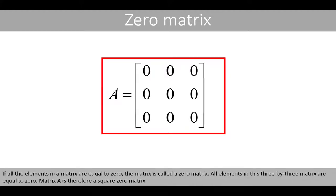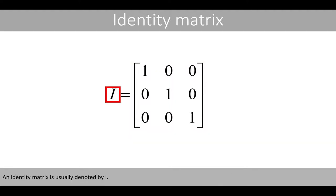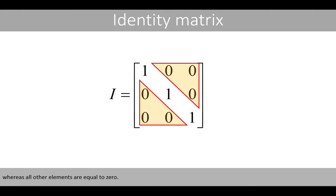If all the elements in a matrix are equal to zero, the matrix is called a zero matrix. All elements in this three by three matrix are equal to zero, so matrix A is therefore a square zero matrix. If the main diagonal of a square matrix is equal to only ones and zeros elsewhere, it is called an identity matrix. An identity matrix is usually denoted by capital I. Note that only the elements in the main diagonal are set to one, whereas all other elements are equal to zero.